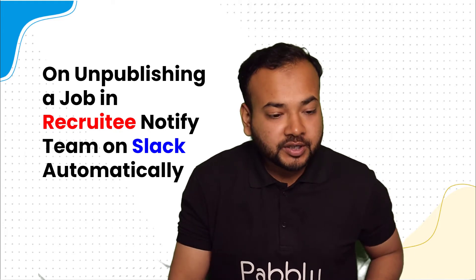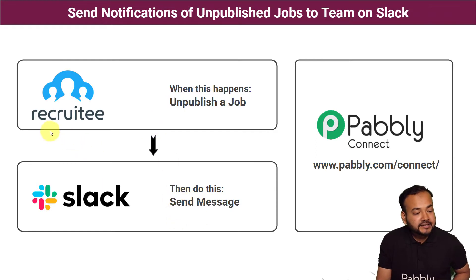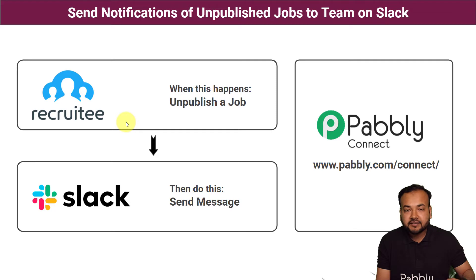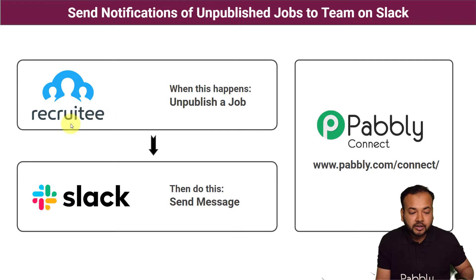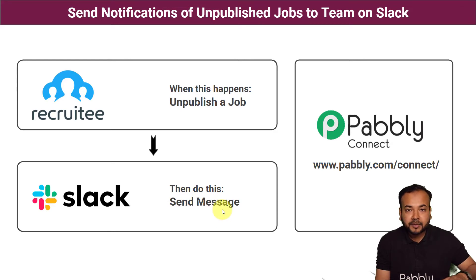Let me show you how it is going to work. The flow of this automation we are about to set up looks like this. We have taken the example of Recruitee, a collaborative hiring tool for HRs and recruitment teams. You can publish a job from this application on many career websites, and also unpublish a job from all those career websites from Recruitee only. When you unpublish a job — meaning you are closing that job opening — a message will be delivered to your team in your Slack channel automatically.